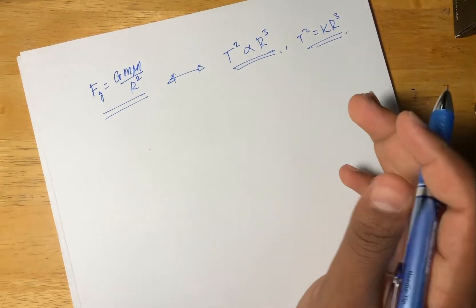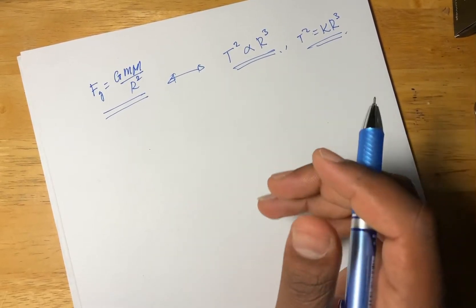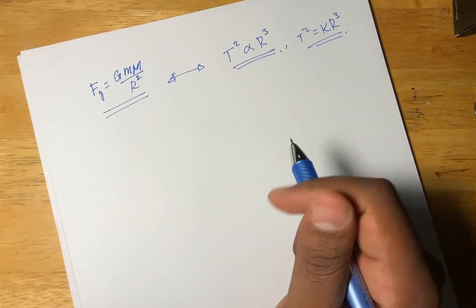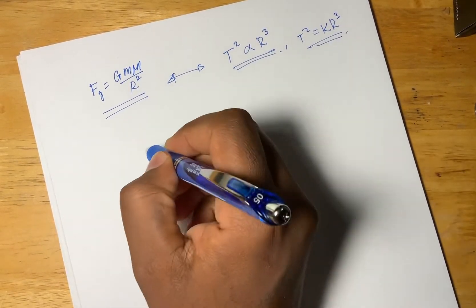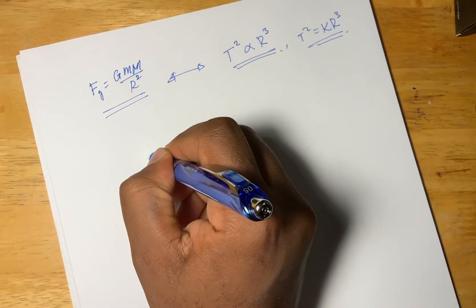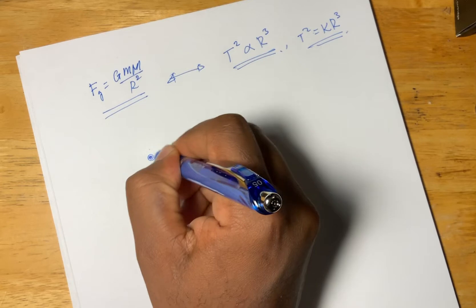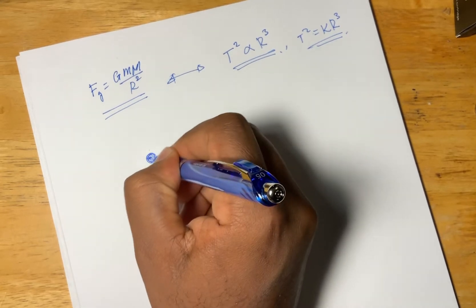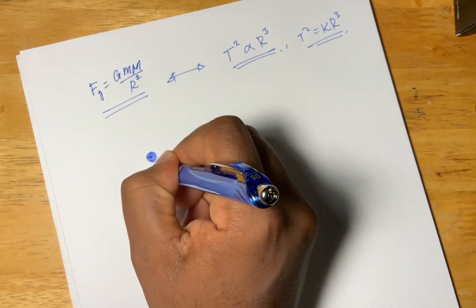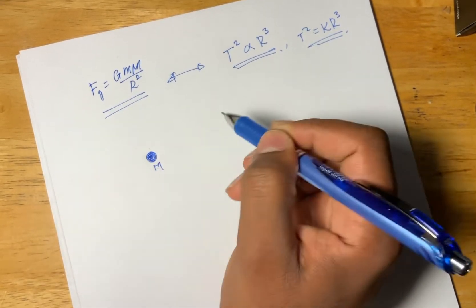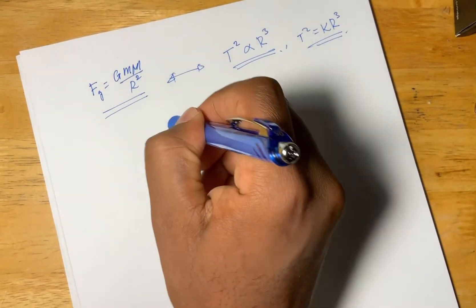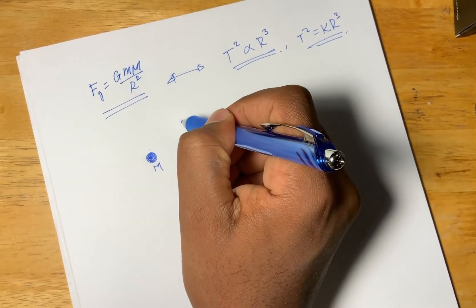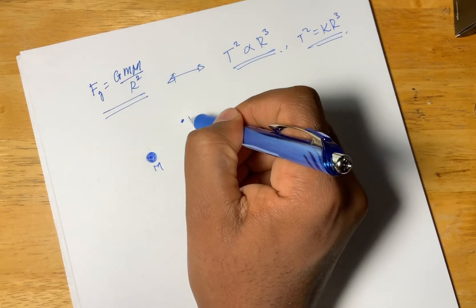So, first things first. There is a diagram — which is the physics problem diagram of the same thing. It is not straightforward, but let's work through it.